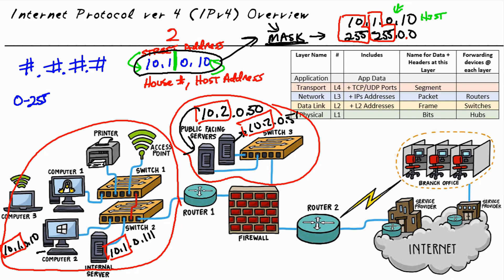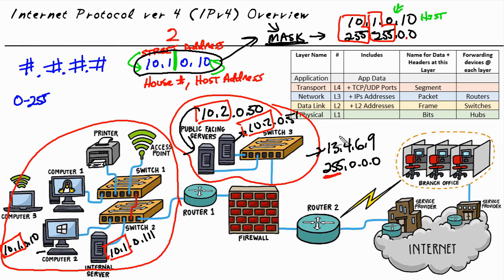Let's do one more. Let's imagine we have an IP address of 13.4.6.9 and a mask of 255.0.0.0. My question for you, based on this example: which part of the IP address 13.4.6.9 is the network, and which is available for host addressing? Based on the logic we just covered, because we have 255 in the first position, the first number — 13 — is the network, and the last three of the mask are all zeros, meaning these last three numbers — 4.6.9 — are all part of the host addressing. And that would be absolutely correct.